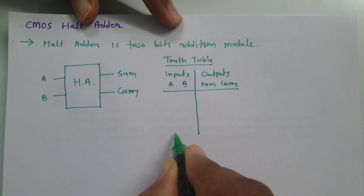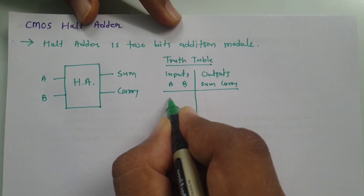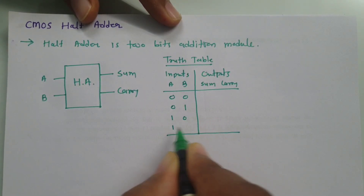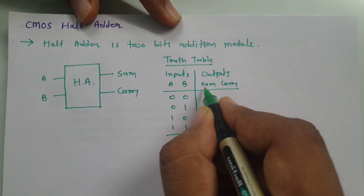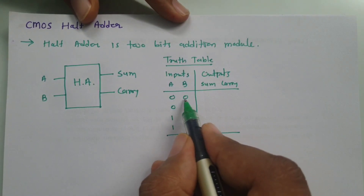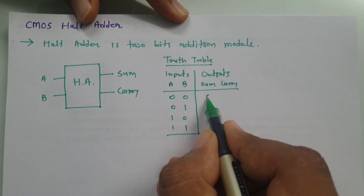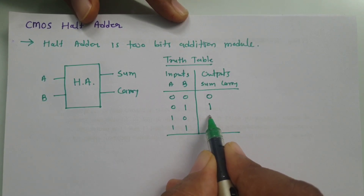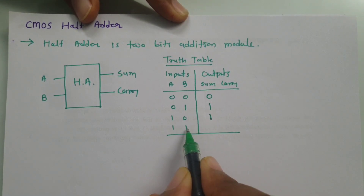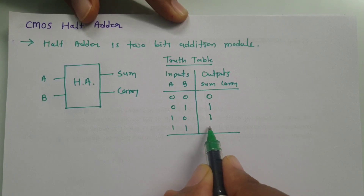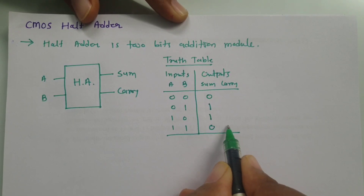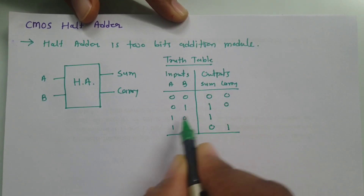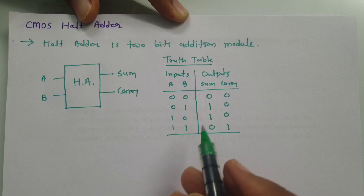As there are two inputs, there are four combinations: 0-0, 0-1, 1-0, and 1-1. For Sum: 0+0=0, 0+1=1, 1+0=1, and 1+1=2 which is binary 10, so Sum is 0 and Carry is 1. For Carry: 0+0 carry is 0, 0+1 carry is 0, 1+0 carry is 0, and 1+1 carry is 1.